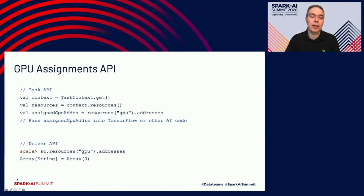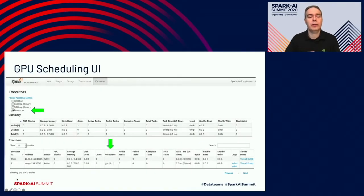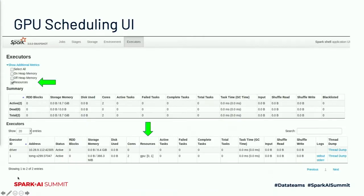Similarly on the driver, you can get that from the Spark context — there's a resources map looking up by accelerator type, GPU in this case, and this example shows that the driver was assigned GPU zero. This accelerator-aware scheduling has also been hooked into the Spark UI. If you click on the executors tab and enable the additional metrics checkbox, it opens up a resources column where we can see what GPUs have been assigned to the driver and executors, so you can verify which GPUs you've actually been assigned for your Spark application.